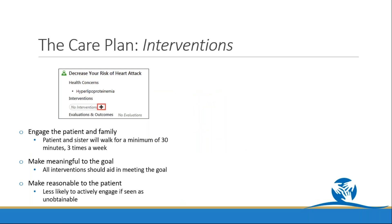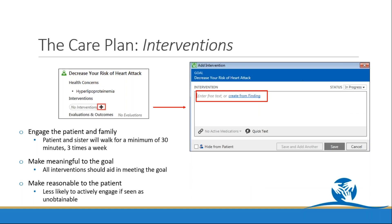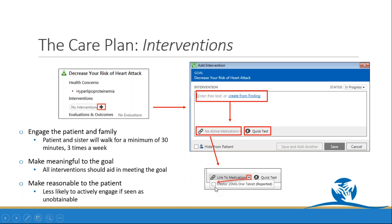To promote best outcomes, interventions should always engage the patient and family, aid in meeting the goal, and be obtainable to the patient. Document an intervention by clicking the plus sign under the section and choose from free text, a medicine finding, or quick text. This section also has a fourth option: link it to an active medication by clicking the drop-down menu and checking the box next to the appropriate medication. When saving, you have two options — save and add another if you're doing multiple interventions, or just save if you're only adding one.